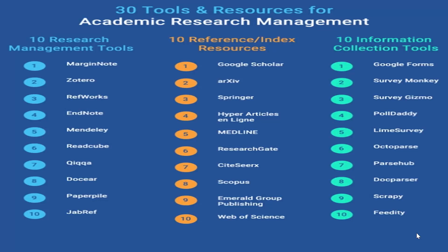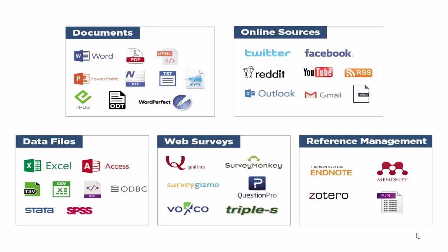What are the academic research management tools and resources? The most important reference management tools include Mendeley. Index resources include Google Scholar. Web of Science is also important. Information collecting tools include Google Forms and SurveyMonkey. Documents we use include Word, Writer, presentation, and PDF.